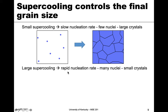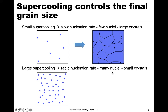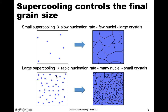In the opposite scenario with a large delta T or supercooling, there is a high driving force, which means a rapid nucleation rate and many nuclei. When they grow, they impede on neighboring grains much more quickly and grow to smaller sizes. This is the key connection between supercooling and final grain size — something to consider when looking at nucleation rates.